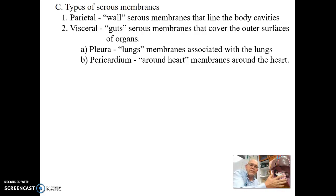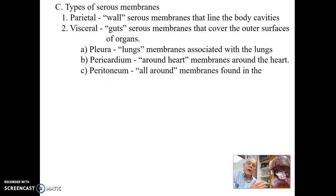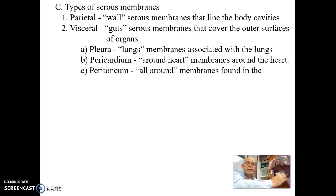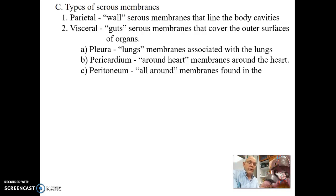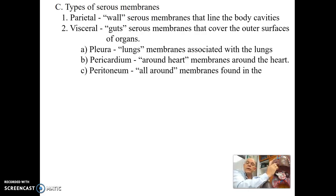All the organs in the abdominopelvic cavity are covered by membranes collectively called the peritoneum. The membrane lining the cavity wall — top, bottom, front, and sides — is the parietal peritoneum. The membranes covering the outer surfaces of the liver, stomach, intestines, and other abdominal organs are the visceral peritoneum.